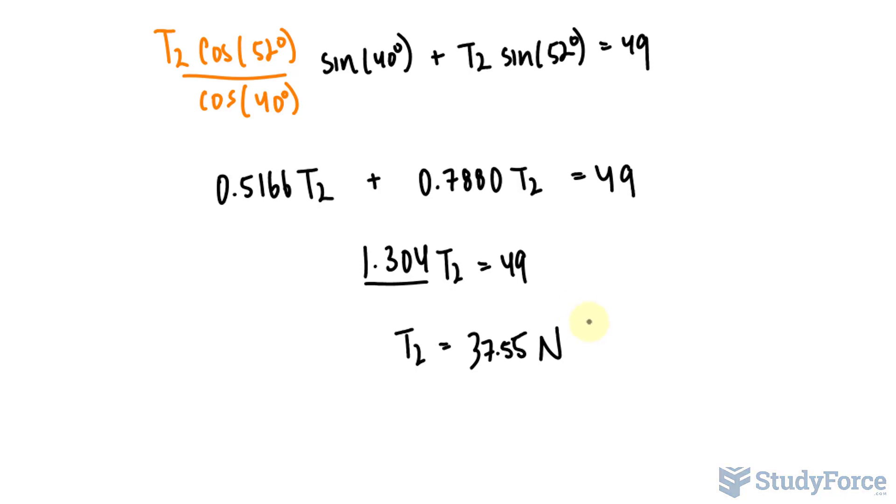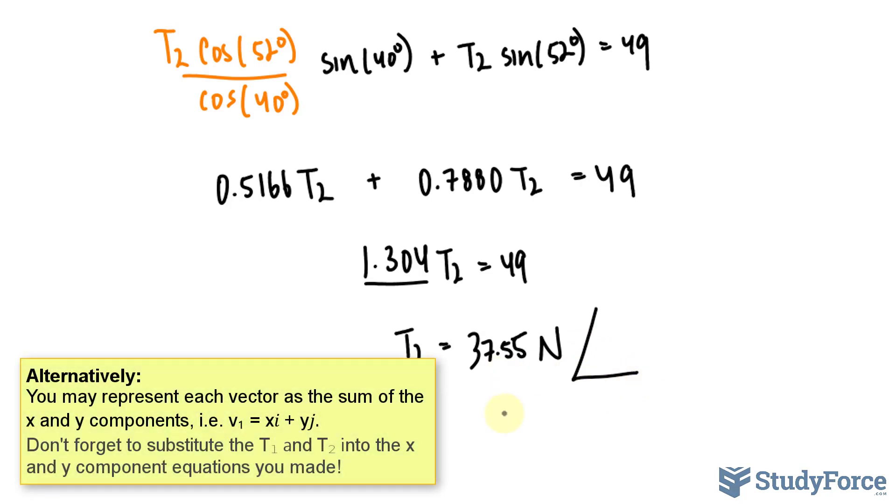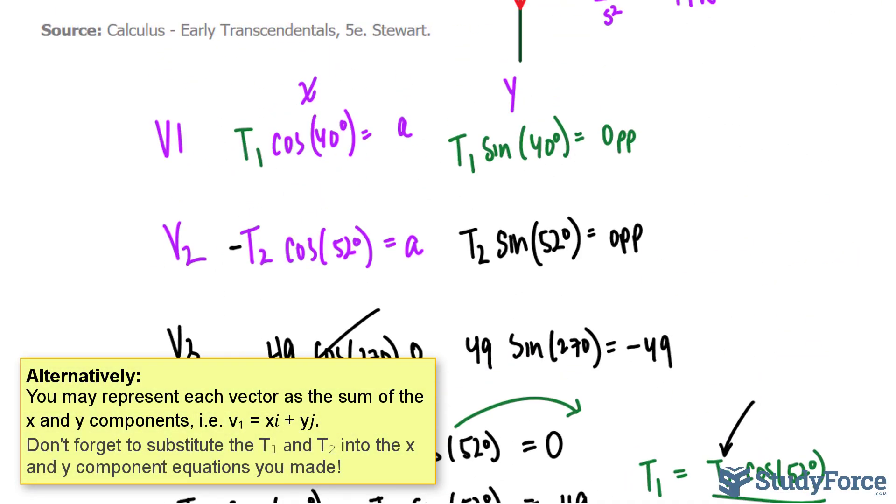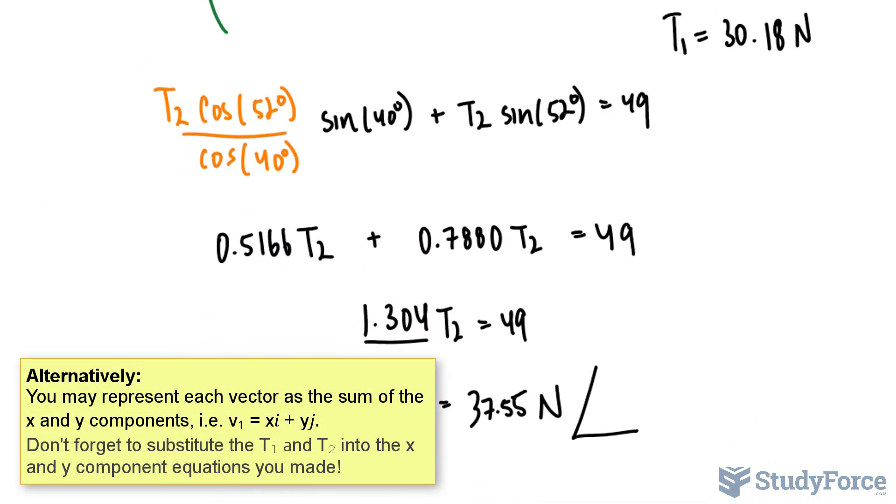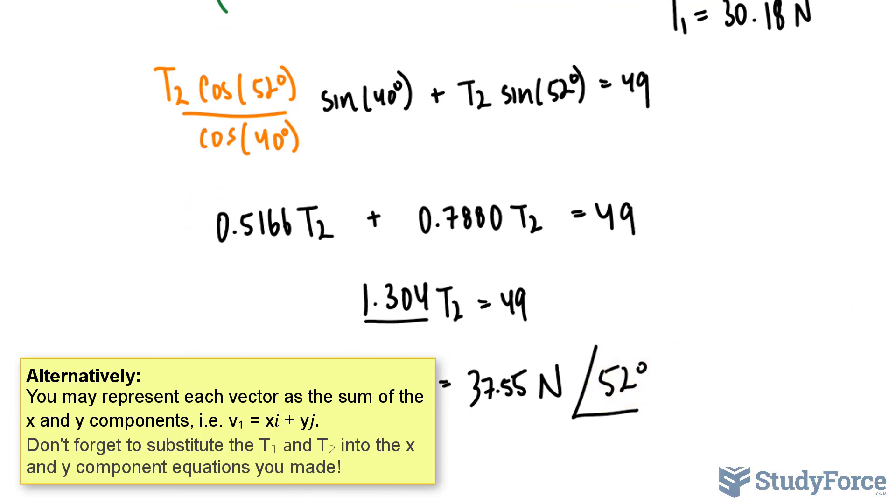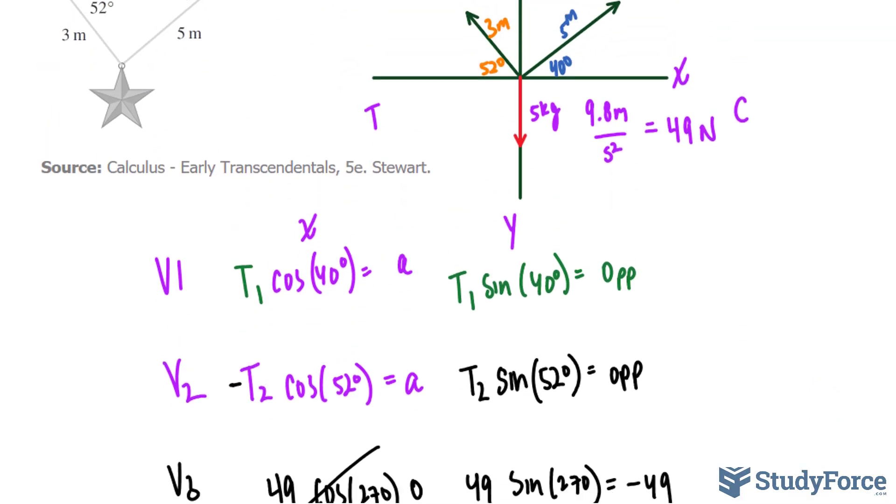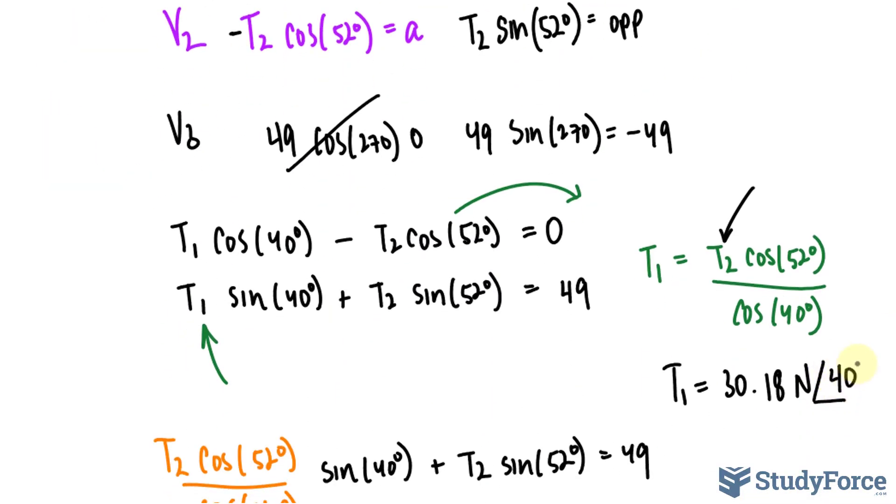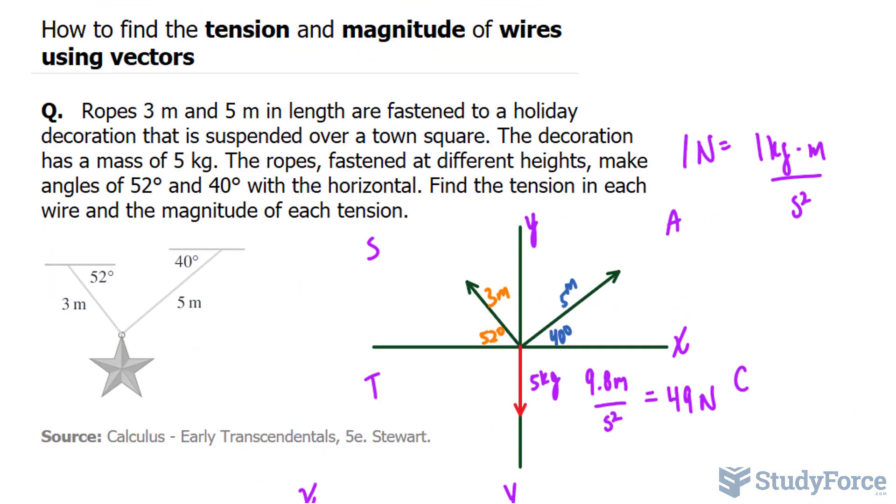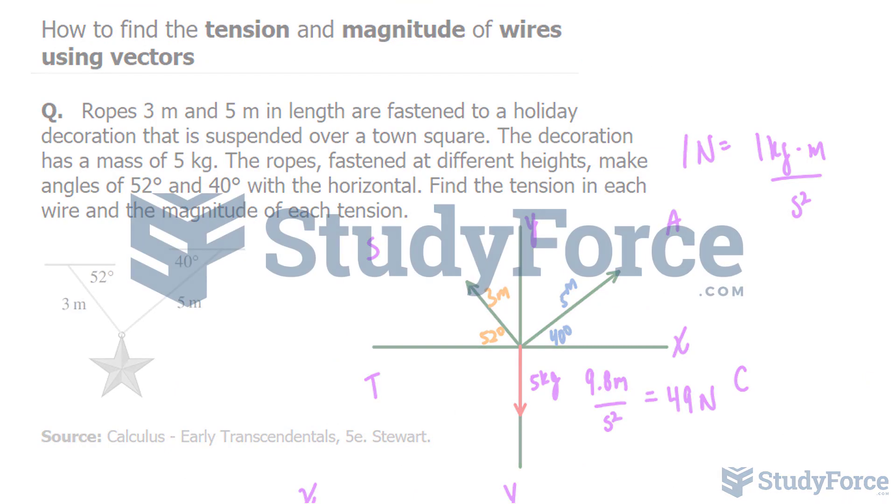Of course, this is the magnitude, and if you want to record this as a vector, you would write down the angle that corresponds to both. So the angle here was 52 degrees, and the angle here, according to the chart, was 40 degrees. And there you have it. That is how to find the tension and magnitude of wires using vectors.